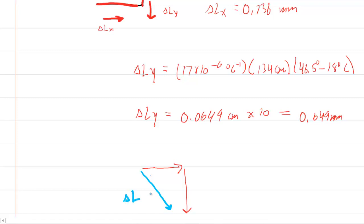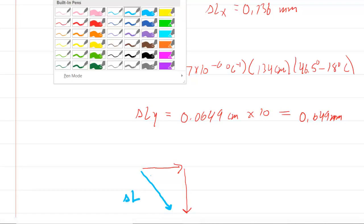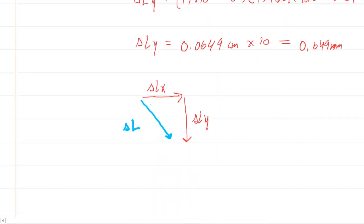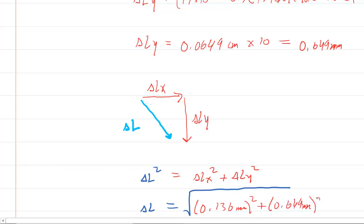So we might just call this the overall change in length. And then we have the components here. Delta Lx, delta Ly. And we'll just do a little bit of Pythagorean theorem. So here we go. Delta L squared is equal to delta Lx squared plus delta Ly squared. We'll fill in. Why don't we just square root both sides, get that over with. Take a big square root here. And then we'll fill in the known values. So again, we had that 0.136. That was millimeters squared plus the 0.649 millimeters squared.